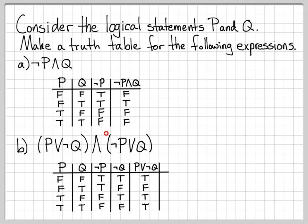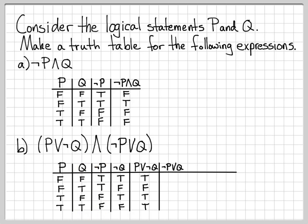Next, let's make a column for 'not P or Q'. I need to OR the 'not P' column with the Q column. Anywhere I have a true, I write true. The first row gives true, the second row gives true, the third row has all false so that's false, and the last row also has a true, so it's true. So this column is: true, true, false, true.